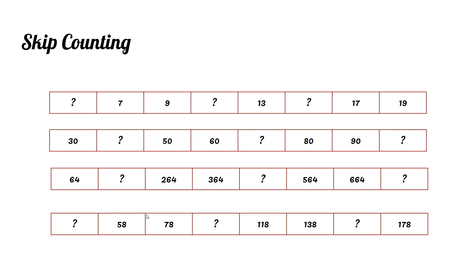Two continuous numbers here are 78 and 58. The answer when we subtract them is 20. So fifty-eight minus twenty is thirty-eight, seventy-eight plus twenty is ninety-eight, one hundred thirty-eight plus twenty is one hundred fifty-eight.